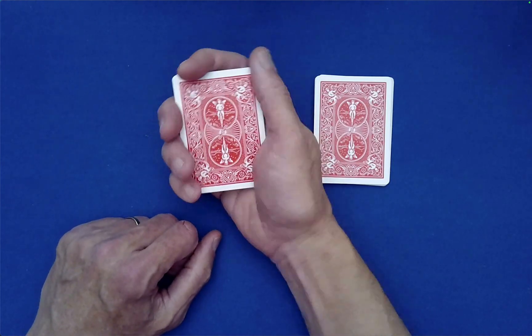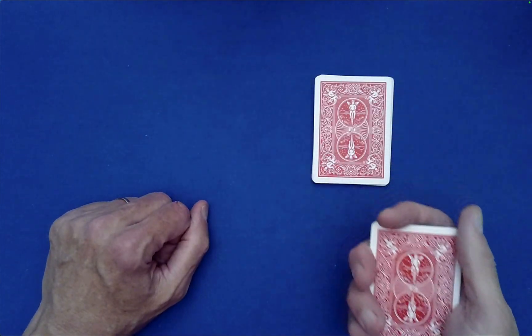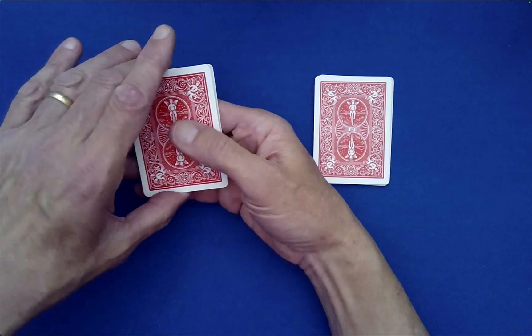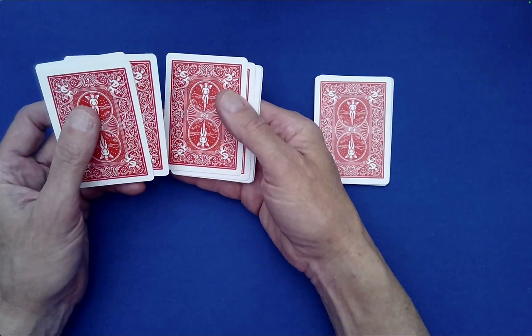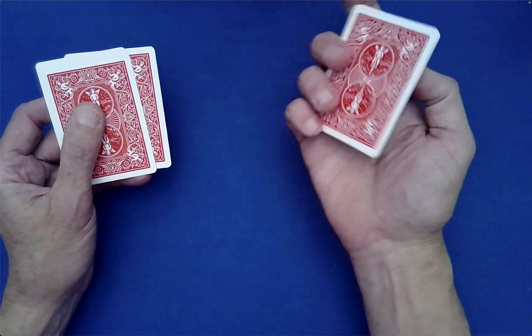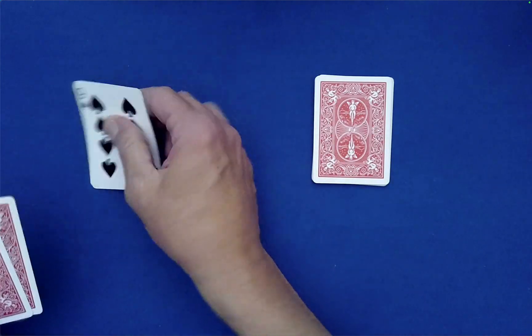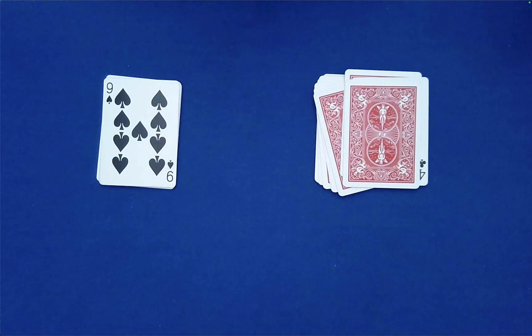So the spectator would hand me one of these packets. I would take this behind my back. Let me show you what I'm doing behind my back. All I'm doing is pushing off the top three cards, flipping the remaining seven, then turning around, setting these here and those there. That's all I will do.